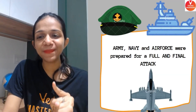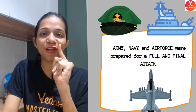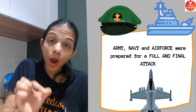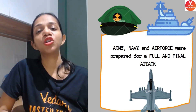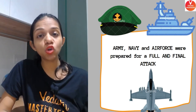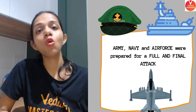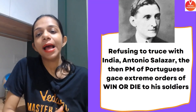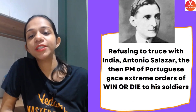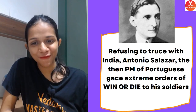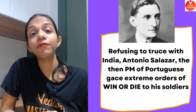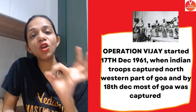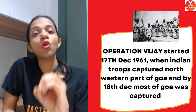The Indian government brought together its army, air force, and navy and prepared for a full frontal final attack. At this point, Jawaharlal Nehru ji ne bola Portuguese ko ki listen — we are ready for a truce. Aap surrender kar do, Goa hamko de do and we will not launch a full frontal attack on you. But refusing the truce, Antonio Salazar, the then Prime Minister of Portugal, gave extreme orders of 'win or die' to his soldiers — but we will not give Goa to you.